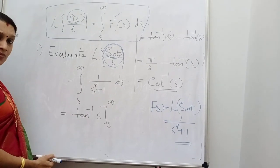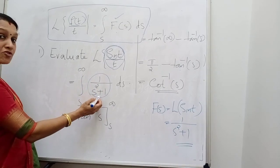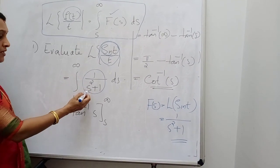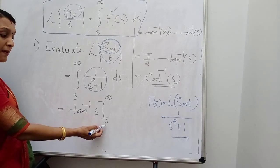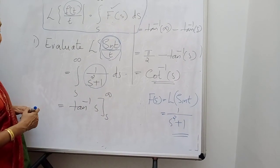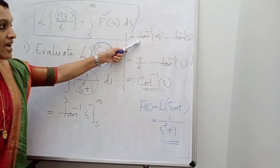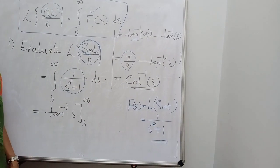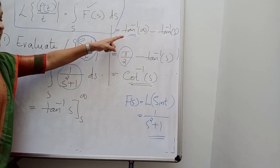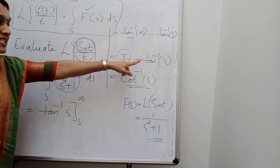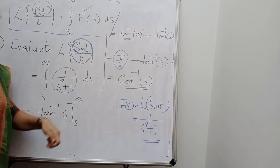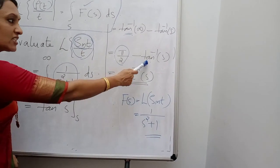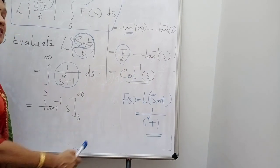What is the integral of 1/(s²+1)? This is of the form 1/(x²+a²), so the integral formula gives (1/a)·tan⁻¹(x/a). Here a=1, so the integral is tan⁻¹(s), evaluated from s to infinity. Substituting limits: tan⁻¹(∞) − tan⁻¹(s). Now tan⁻¹(∞) = π/2. So the result is π/2 − tan⁻¹(s), which equals cot⁻¹(s). This is the final answer.